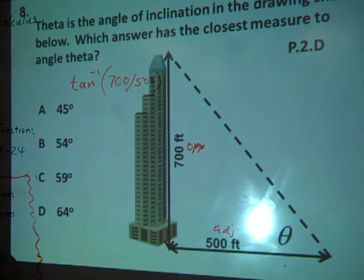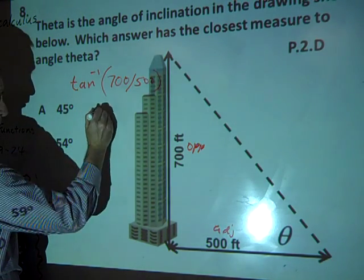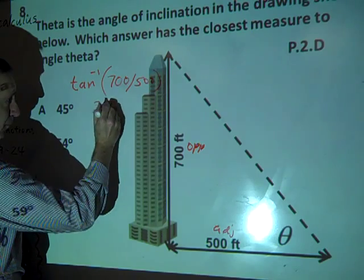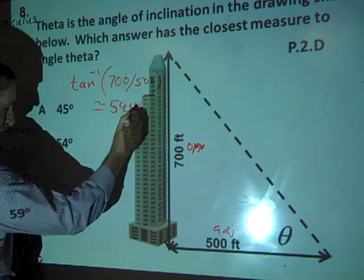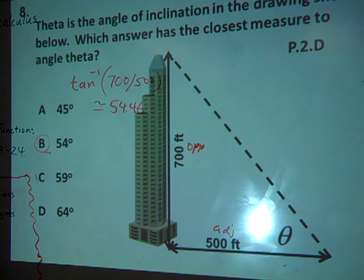And what do you get for that? 54.46. Okay, we get 54.46, and that would be closest to B.